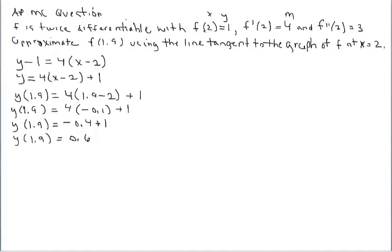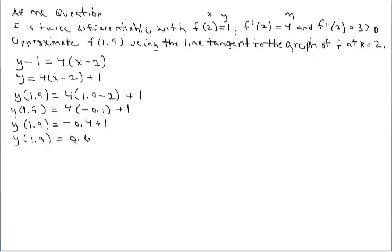I don't know the actual functional value because I don't have the function to plug 1.9 into. But if the question had further asked whether this approximation is over or under the actual y-value on the function, it's all about concavity. The second derivative at 2 is positive 3, and because this is greater than 0, we know the graph is concave up. If the graph is concave up, we hit the y-value on the tangent line before we encounter the y-value on the function. So this approximation is less than the actual value — probably just a little bigger than 0.6.